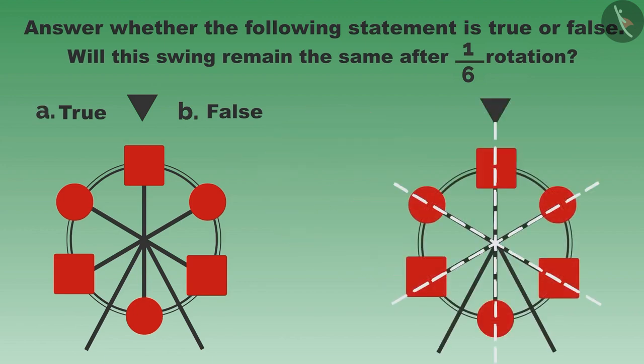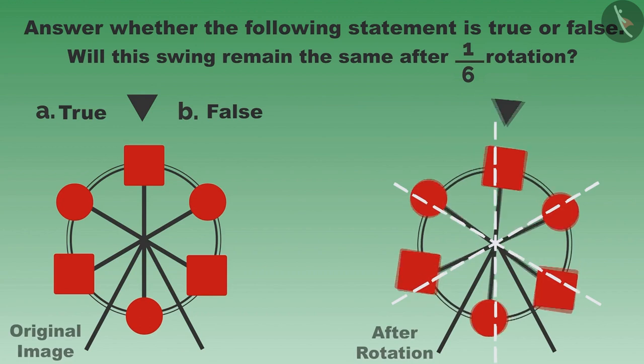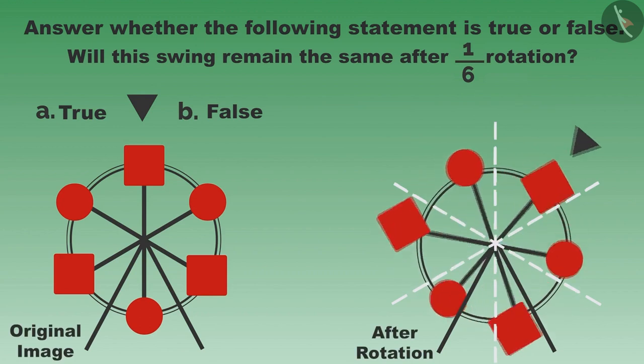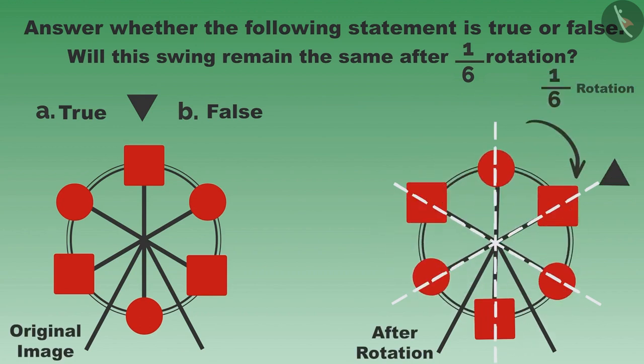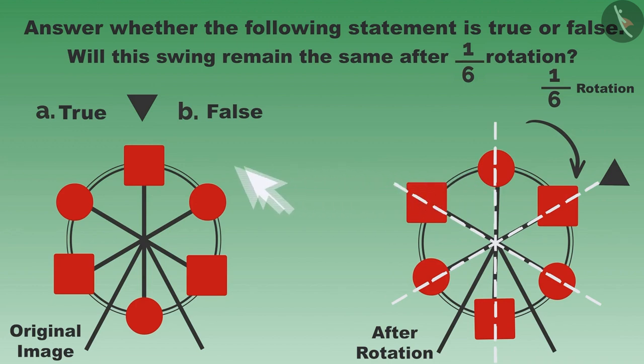This swing does not match with the earlier one after one-sixth rotation. Here you have to focus on the shape of the cabins also. If the shape of the cabin is not the same, then this swing does not match with the earlier one after rotation.